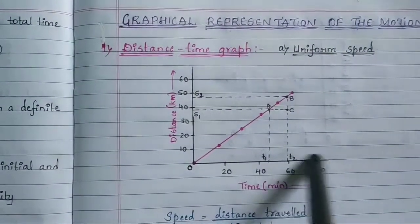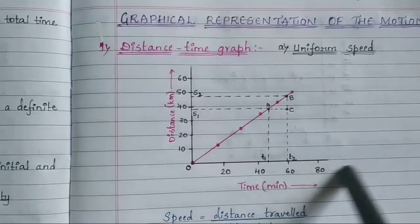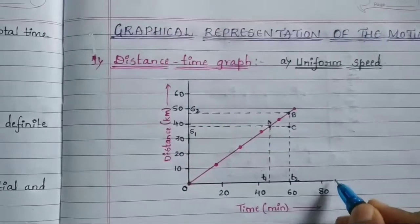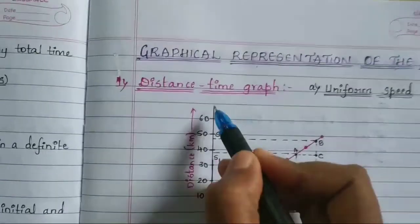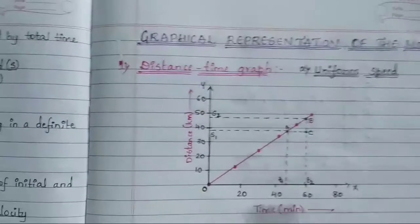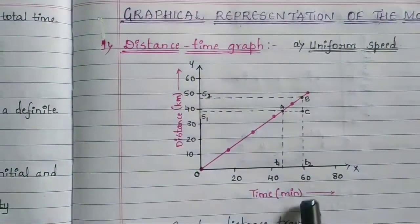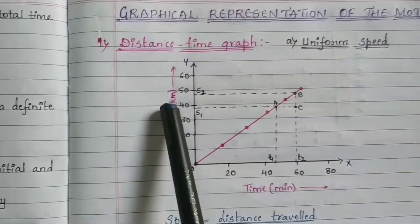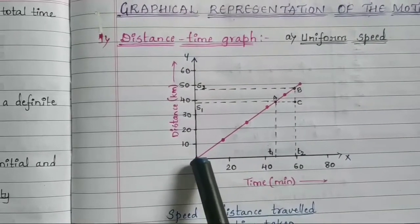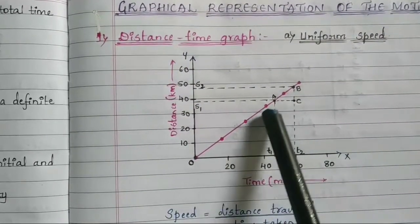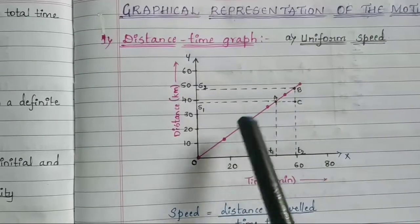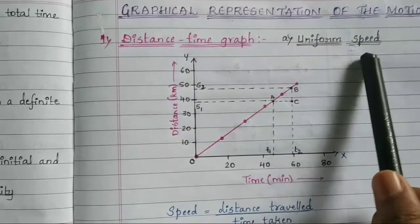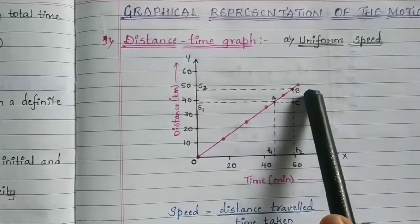Time is taken on the x-axis and distance is taken on the y-axis — time in minutes and distance in kilometers. Here you can see there is a straight line. This straight line shows that in the case of a distance-time graph, when there is uniform speed, our graph will be a straight line.